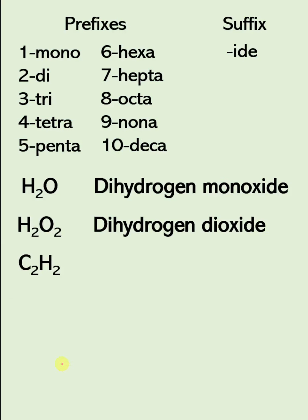Next, how about this one? What do you think is the name for this one? So we have two atoms of carbon — that is di — so dicarbon. Then for the second element, we have two hydrogens, that is also di. Then for hydrogen, the suffix or the ending must be -ide, so we change this one to dihydride. So this one is dicarbon dihydride.